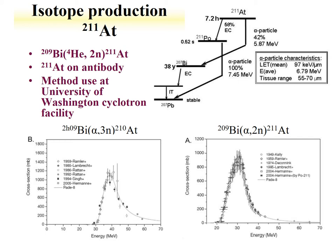This production is performed at the UW Medical Cyclotron Facility. Cross-sections as a function of energy are shown — the cross-section for the bismuth-209 alpha-2N reaction peaks at around 30 MeV, while the 3N reaction peaks at a higher energy of about 40 MeV. To preferentially produce astatine-211, the preferred beam energy is around 30 MeV, where the cross-section for the 3N reaction is very low and peaks for the 2N reaction.